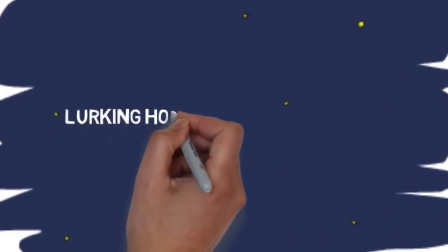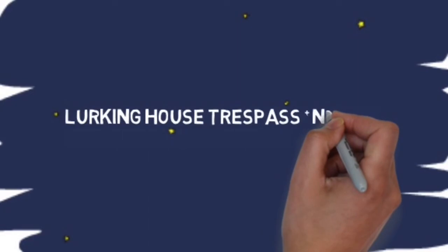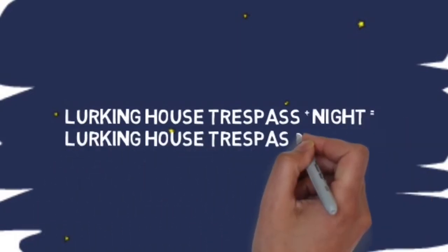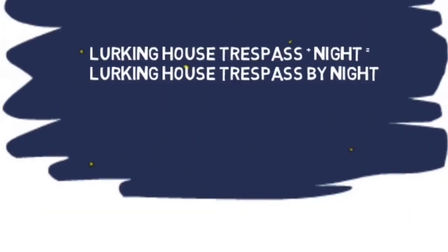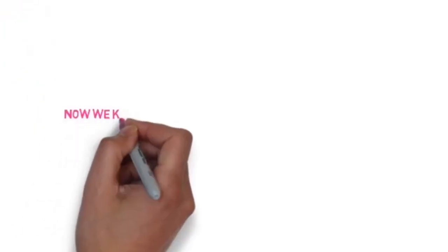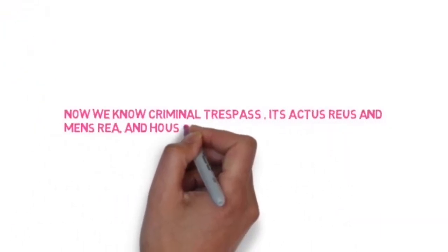The trespasser makes preparation to surreptitiously enter the property. If this lurking house trespass is done at night, then it becomes lurking house trespass by night. So we know criminal trespass, its actus reus, its mens rea, and we know if it's done on a house it becomes house trespass.